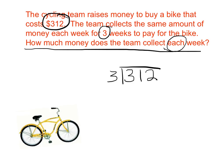Remember, today we're working with zeros in the quotient. I'm going to start off and find my starting place, which is over the 3 in the hundreds place. 3 goes into 3 one time. I'm going to multiply — that gives me 3. I subtract, get zero, bring down. I have 1. Now, 3 cannot go into 1. This is where the zero comes in.